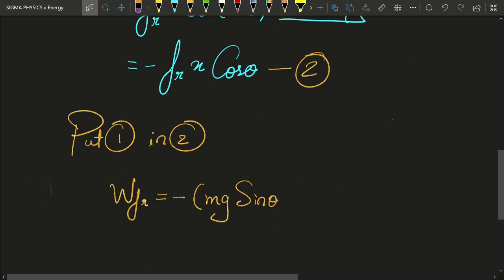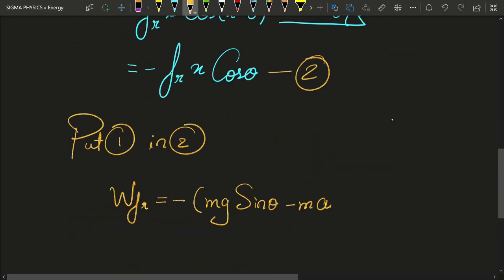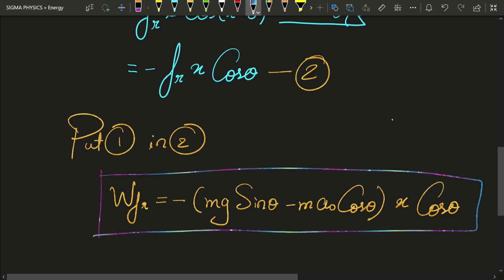times x cos theta. And that is exactly what we wanted to find: the work done by friction as the car moves by a distance of x.